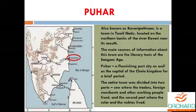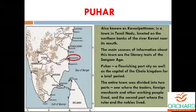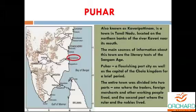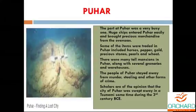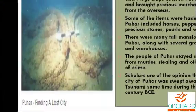Since many precious stones, gold, and pearls were traded here, the people of Puhar stayed away from murder, stealing, and other forms of crime. This region was swept away in a tsunami sometime during the 3rd century BCE — that is why we say that Kaveri Pattanam was submerged and the ruins are found under the ocean. Here you can see the image of Puhar — a lost city found under the ocean, submerged because of the tsunami.